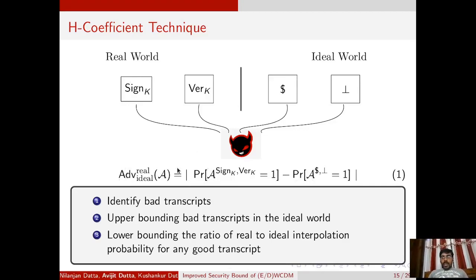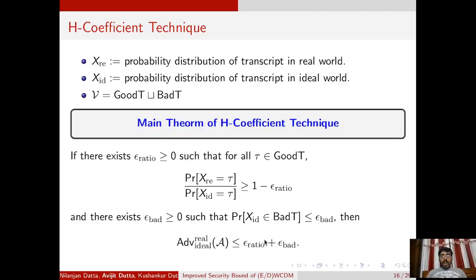To upper bound this advantage using the H-coefficient technique, one needs to do the following three things: first, identify the bad transcripts; second, upper bound the probability of bad transcripts in the ideal world; and third, for a fixed good transcript, lower bound the ratio of the real to ideal interpolation probability. A transcript is the summarization of the interaction between the adversary and the oracle, and the set of all transcripts is the disjoint union of the set of good transcripts and the set of bad transcripts.